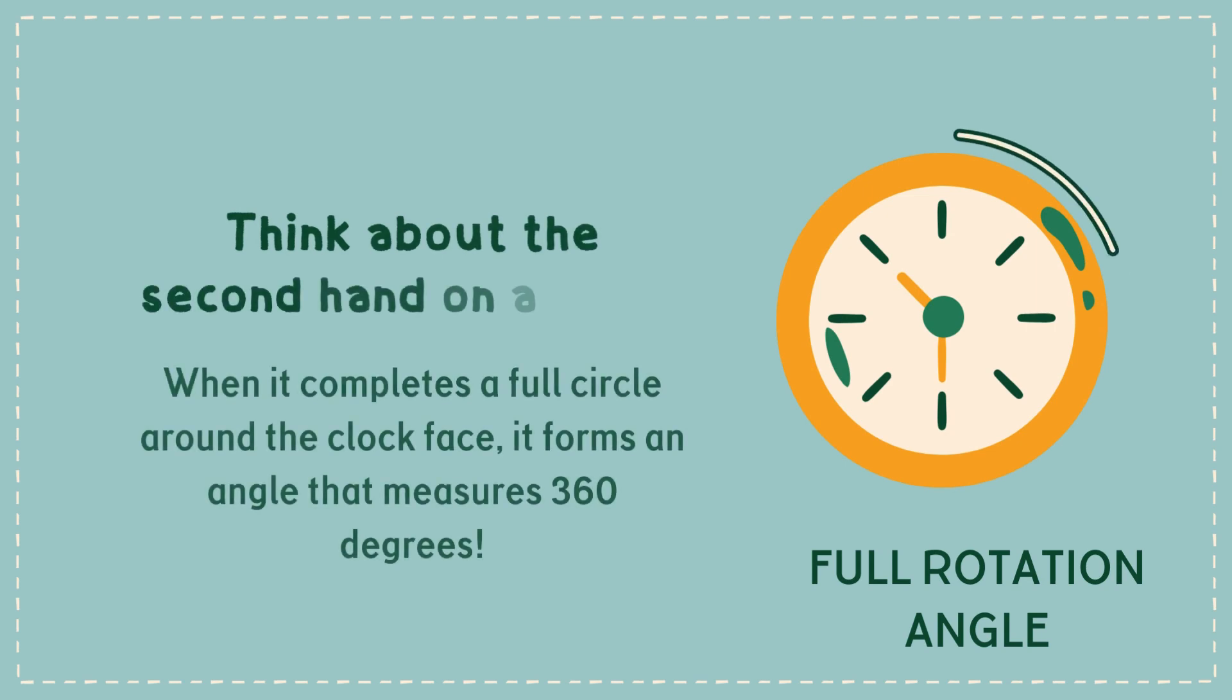An angle equal to 360 degrees is called full rotation or full angle. It is formed when one of the arms takes a complete rotation to form an angle. When a second's hand completes a full circle around the clock face, it forms an angle that measures 360 degrees.